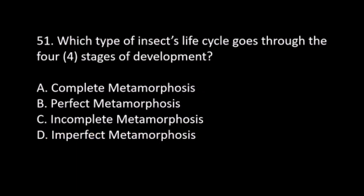Number 51. Which type of insect life cycle goes through four stages of development? A. Complete metamorphosis. B. Perfect metamorphosis. C. Incomplete metamorphosis. D. Imperfect metamorphosis. The answer is A. Complete metamorphosis.